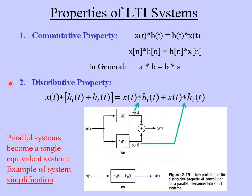The second property is the distributive property. Suppose we have a system where the input signal x(t) is being convolved with the sum of h1 and h2 from two different subsystems. The distributive property means we can distribute x inside the brackets, giving us x convolution h1 plus x convolution h2.